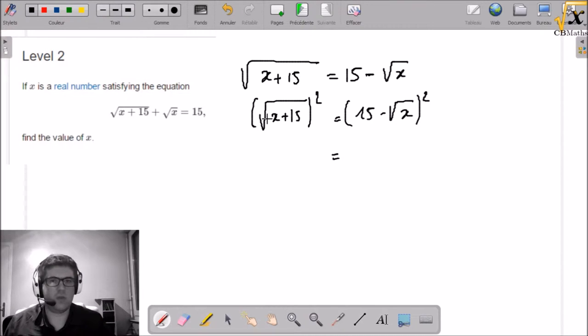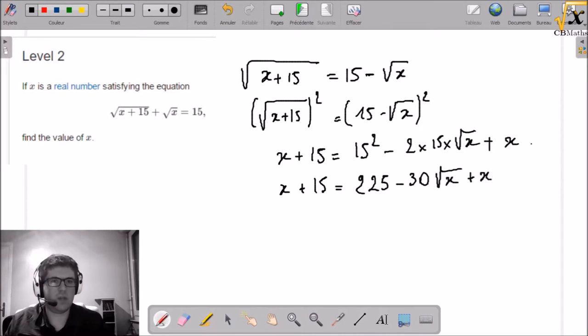Square root of x plus 15. So you can develop this parenthesis 15 square minus 2 times 15 times square root of x plus x, square root of x square, x plus 15.